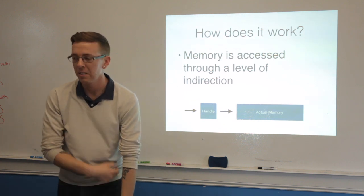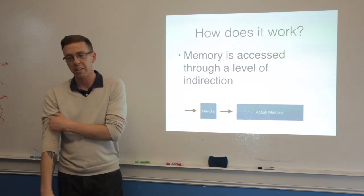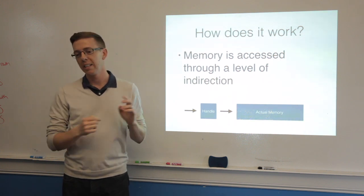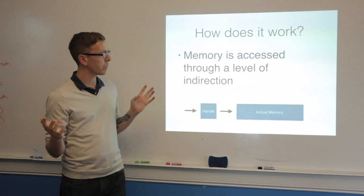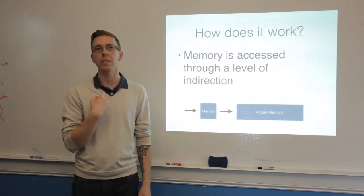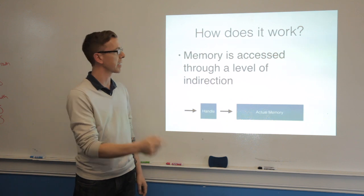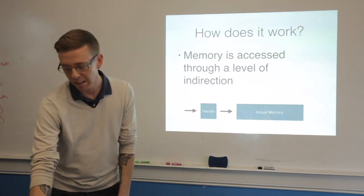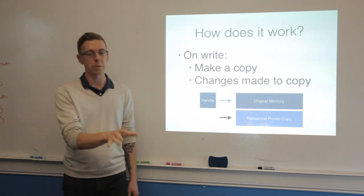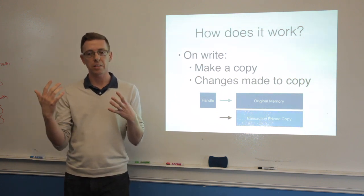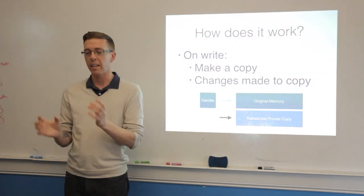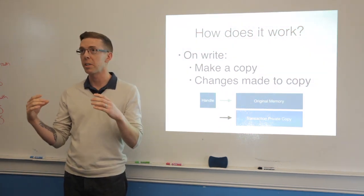So how does all of this magic work? In general, there's a couple variations, but we'll go through a general approach. The system accesses all memory through a level of indirection. So to access a logical block of memory, I need to go through a handle. And this lets us do a few things. But when I want to write, so I want to write a new value to a block of memory, the transactional system looks at the handle, looks at what the global state of it is, and makes a complete copy of that entire chunk of memory.